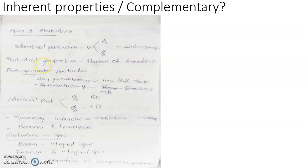Statistical properties of a system depend on the number of degrees of freedom, governed by a distribution law. In the case of distinguishable identical particles — that is, classical identical particles — any permutation of particles gives rise to a new degree of freedom and hence a new distinguishable state. The average energy associated with each degree of freedom is half kT, which is the Maxwell-Boltzmann distribution law, and the particles obey Maxwell-Boltzmann statistics.